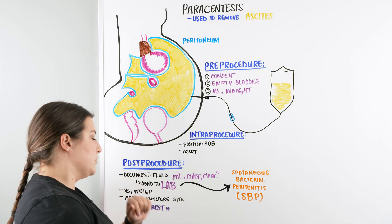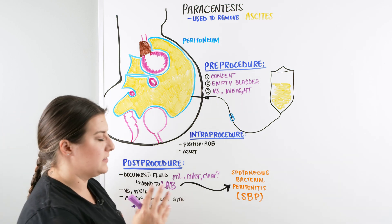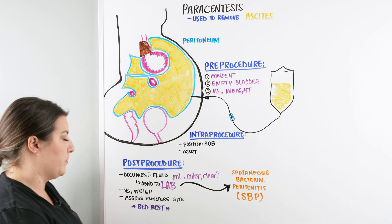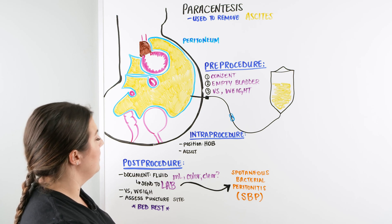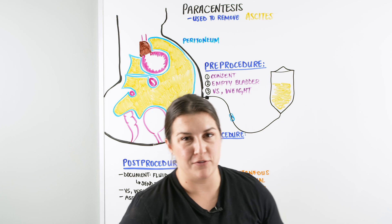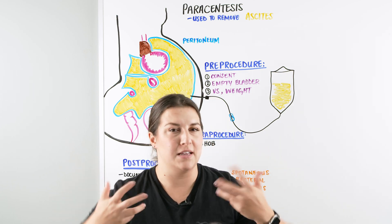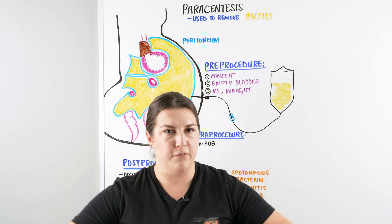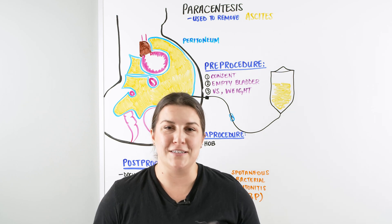After that, we assess the puncture site — making sure it looks clear, healthy, and not developing any infection. We apply a dressing and then talk to our patient about bed rest. Hopefully the patient is feeling a lot better, and they usually do. They'll say, 'I feel like I can breathe a little better,' which makes sense because now the lungs can expand down into that cavity where all that fluid was before pushing up on their abdomen.